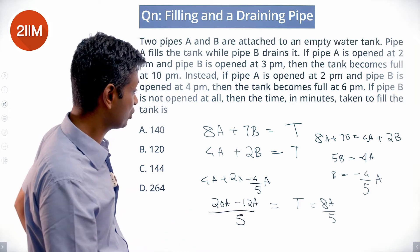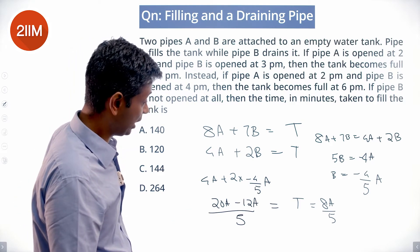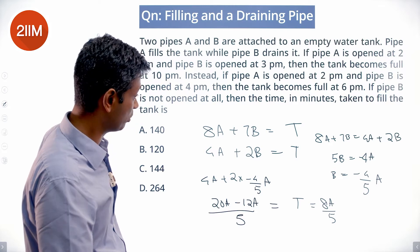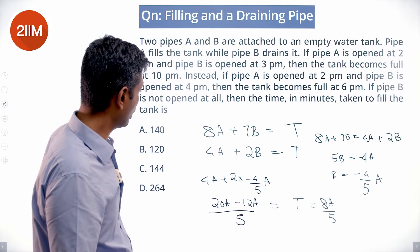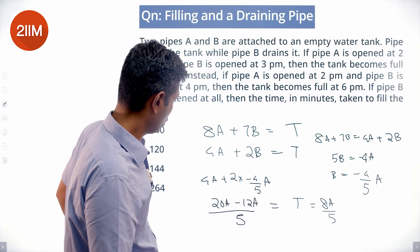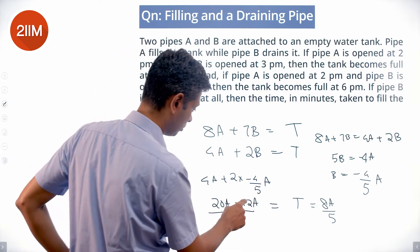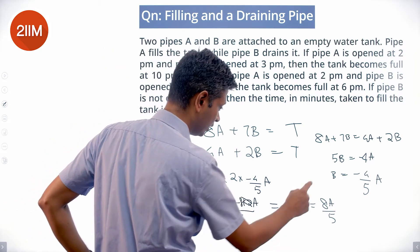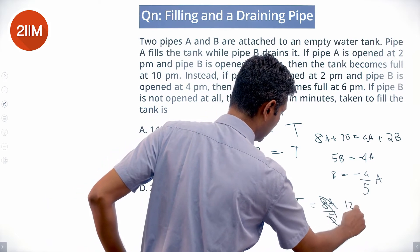Since 8A plus 7B equals 4A plus 2B, and B is minus 4/5 A, we get 4A minus 8/5 A. Sorry, this is minus 8/5 A. The tank capacity should be 12A/5.